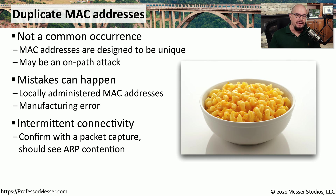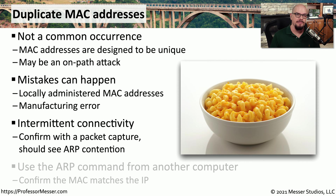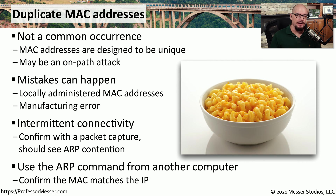One great way to see if duplicate MACs are a problem is to take a packet capture. You should be able to see duplicate devices fighting over ARP where the MAC address keeps changing for a single IP address. You might also confirm a device's MAC address by looking at your ARP cache — you can ping a device, look at your ARP cache, and see what MAC address is associated with that particular IP address.